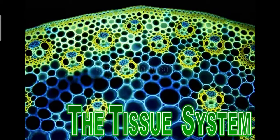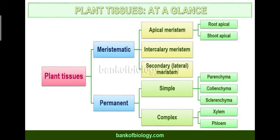Good afternoon, class 11 — welcome to the class. In the last class we completed the plant tissues, up to the topic of complex permanent tissue: xylem and phloem. Here is a short flow chart of plant tissues. Plant tissue is divided into two types: meristematic and permanent. Permanent tissue is again divided into three different types.